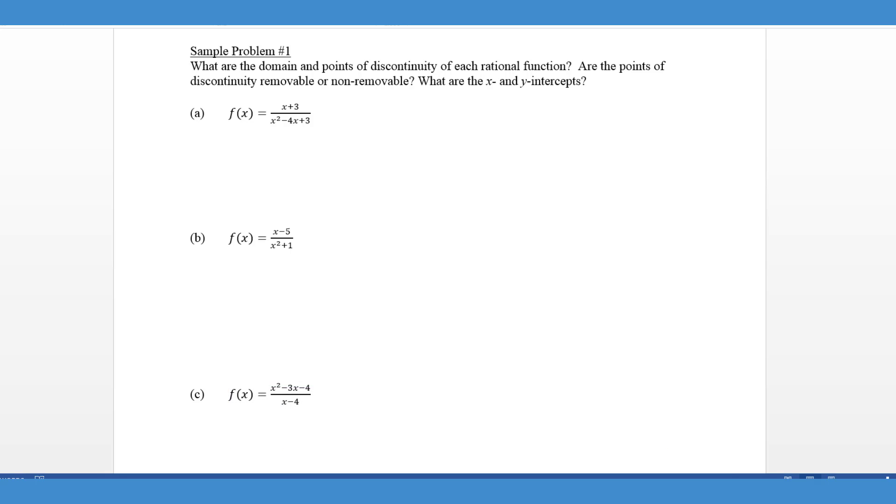The first thing we're going to do in order to figure this out is we're going to factor the denominator and get a simplified version of this. So that's x plus three. The first thing that we notice is there's no factors that can be canceled out. So this is non-removable, and we know non-removable is going to create an asymptote for us. We need to figure out where those asymptotes are, and in particular, these are vertical asymptotes.